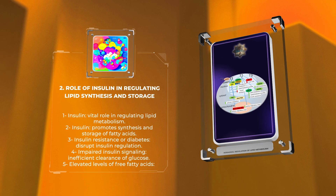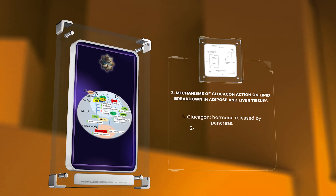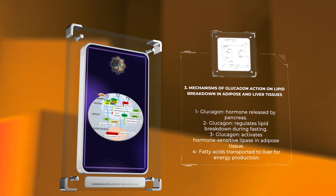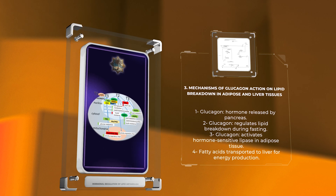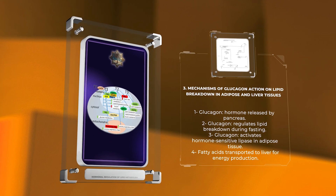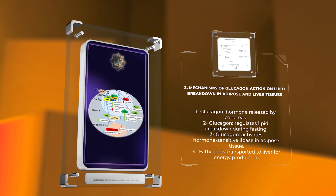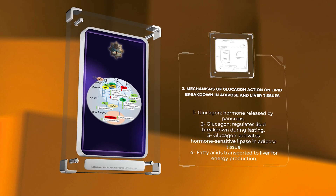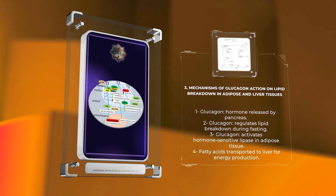Mechanisms of glucagon action on lipid breakdown in adipose and liver tissues. Let's now explore the mechanisms of glucagon, a hormone released by the pancreas, in regulating lipid breakdown. During times of fasting or low blood glucose, glucagon levels rise, signaling the liver to undergo glycogenolysis and gluconeogenesis to produce glucose. However, glucagon also plays a role in adipose and liver tissue lipid breakdown. It activates hormone-sensitive lipase, an enzyme responsible for hydrolyzing triglycerides into glycerol and fatty acids in adipose tissue. These released fatty acids are then transported to the liver, where they undergo beta-oxidation to produce energy. This hormonal interplay between insulin and glucagon ensures a delicate balance in lipid metabolism, preventing excessive lipid storage while providing an adequate energy supply.